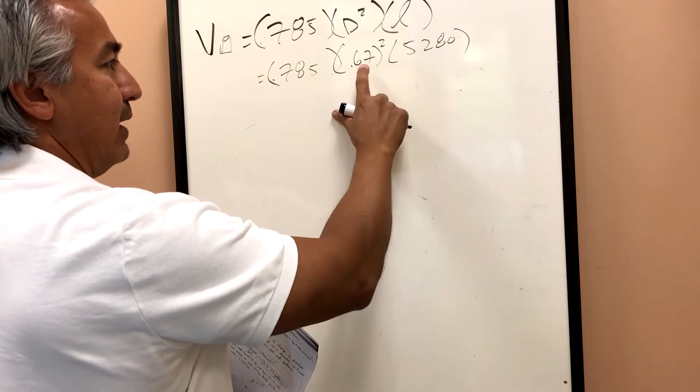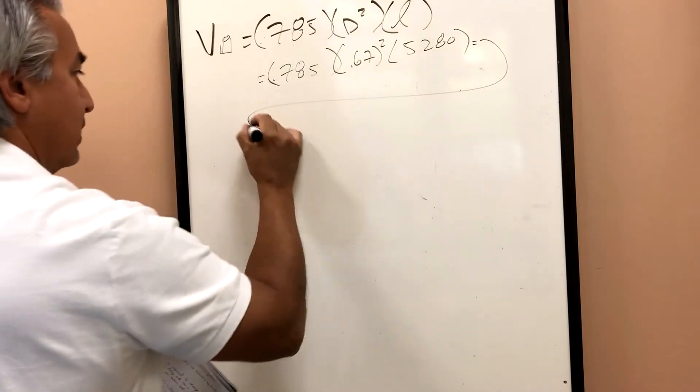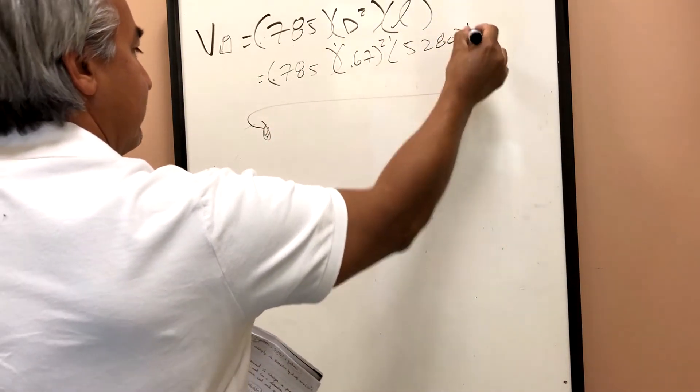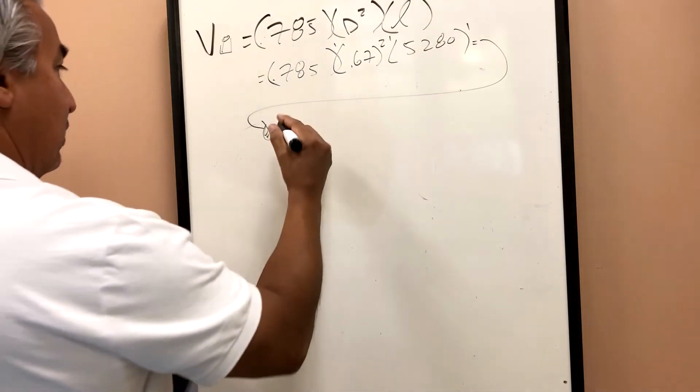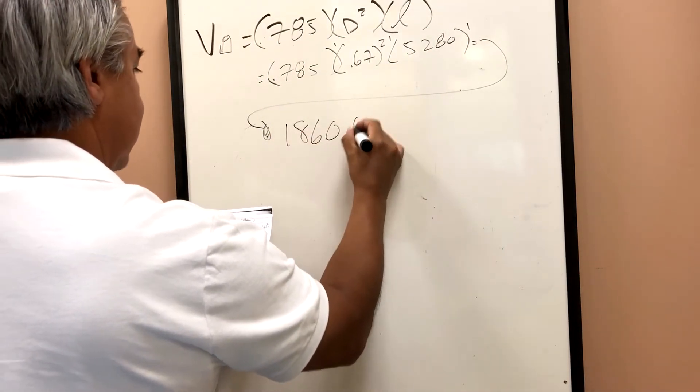And then now I'm just going to simplify this expression 0.785 times 0.67 times 0.67 times 5,280 is going to equal, and by the way, these are all in feet, 1,860.6 cubic feet.